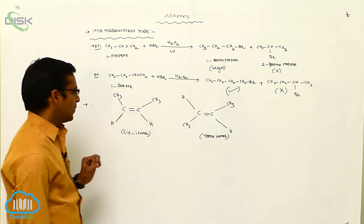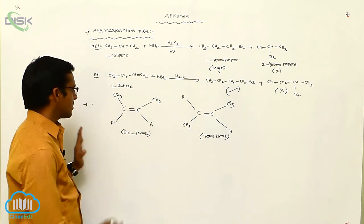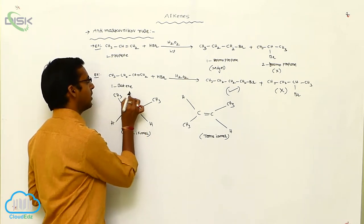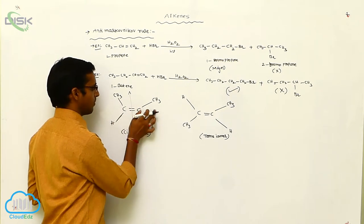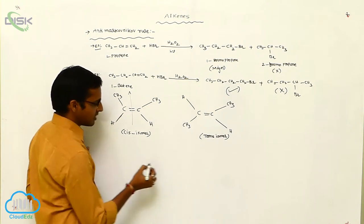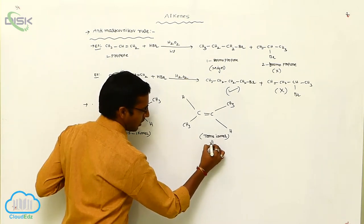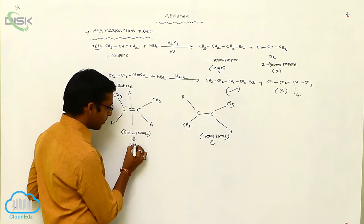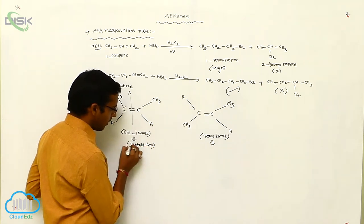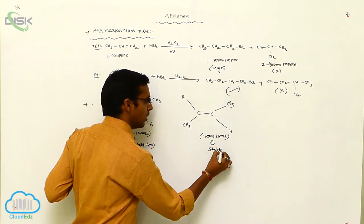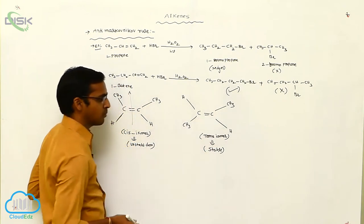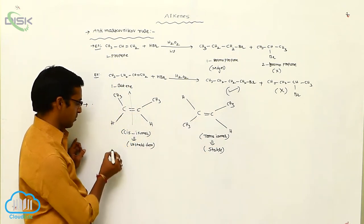In cis isomer, when a plane is passed through the double bond, the identical parts are on the same side. In trans isomer, the identical parts are on opposite sides. Generally, the cis isomer is unstable while the trans isomer is stable, because bulky groups are arranged in opposite directions in the trans form, making trans isomer more stable than cis isomer.